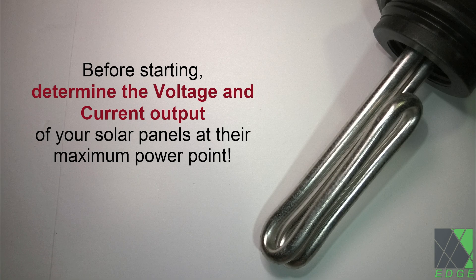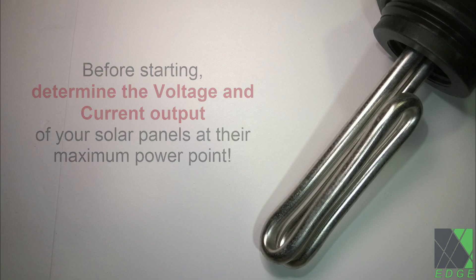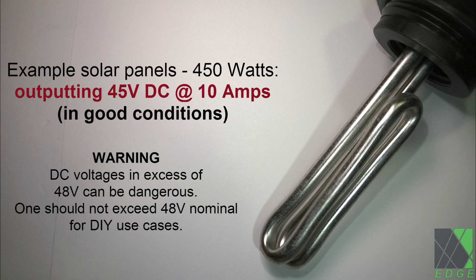For this example, let's say in good conditions our solar panels at their maximum power point are known to put out about 45 volts at 10 amps, which is about 450 watts.